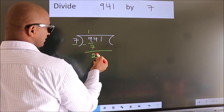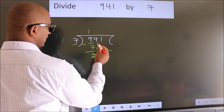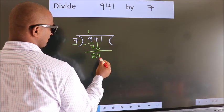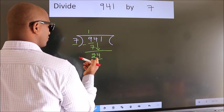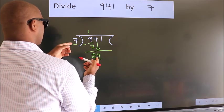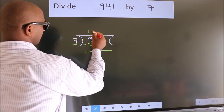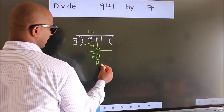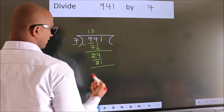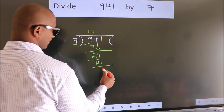After this bring down the next number. So 4 down, so 24. A number close to 24 in the 7 table is 7 times 3 is 21. Now we subtract. We get 3.